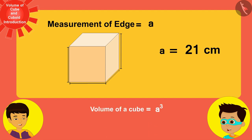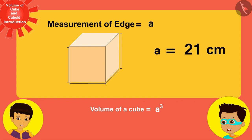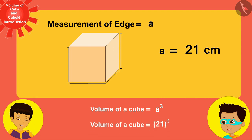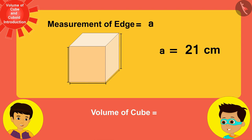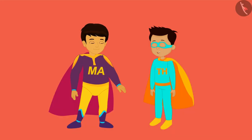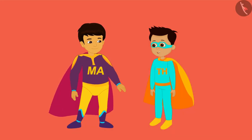Now I will find the volume of this cube shaped paper packet. I measure any one edge of this cube shaped paper packet and insert its value in the formula for the volume of a cube — 21 centimeters. By solving, the volume of the cube shaped packet of paper is 9261 cubic centimeters. Now I understand it, Thomas!